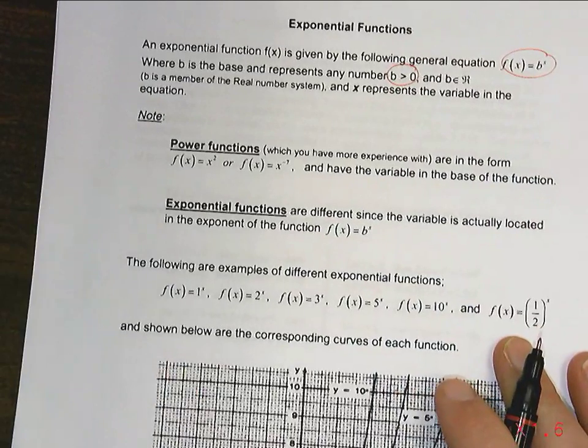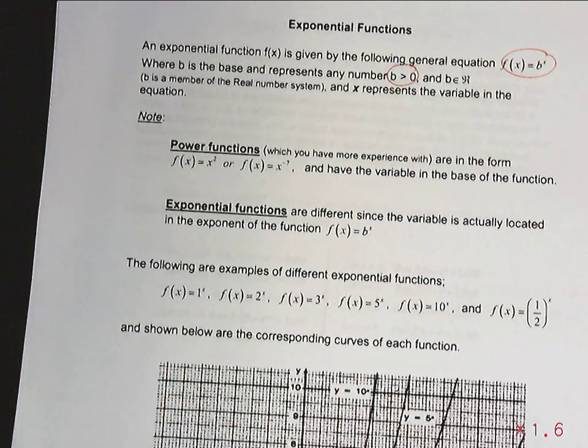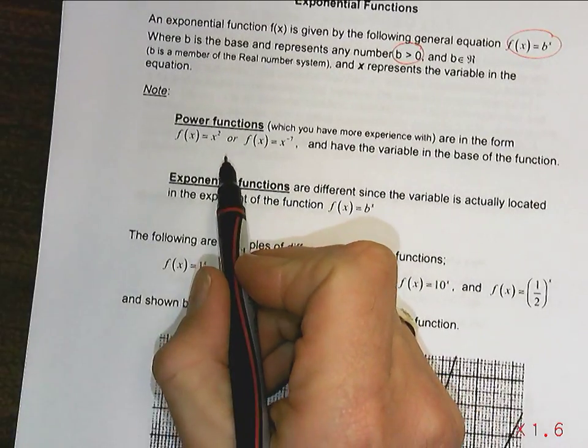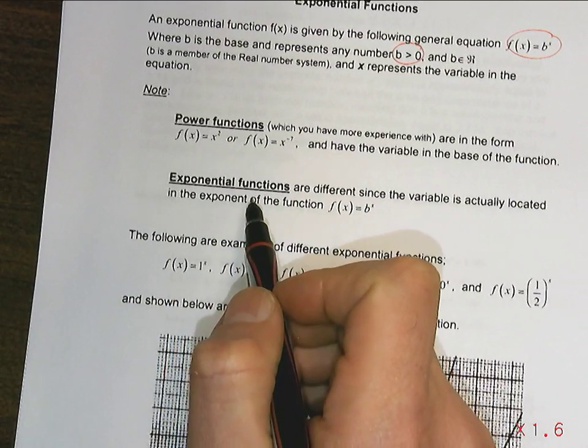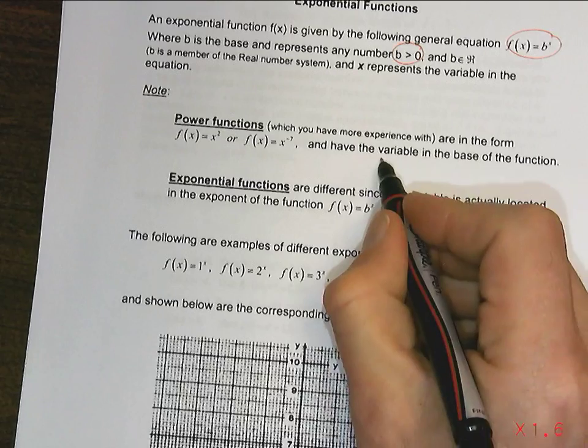So these are called exponential functions, and again, they are different than power functions. Now, power functions we've been dealing with up until now, so x squared and x to the negative 7, these are ones that have a variable in the base.